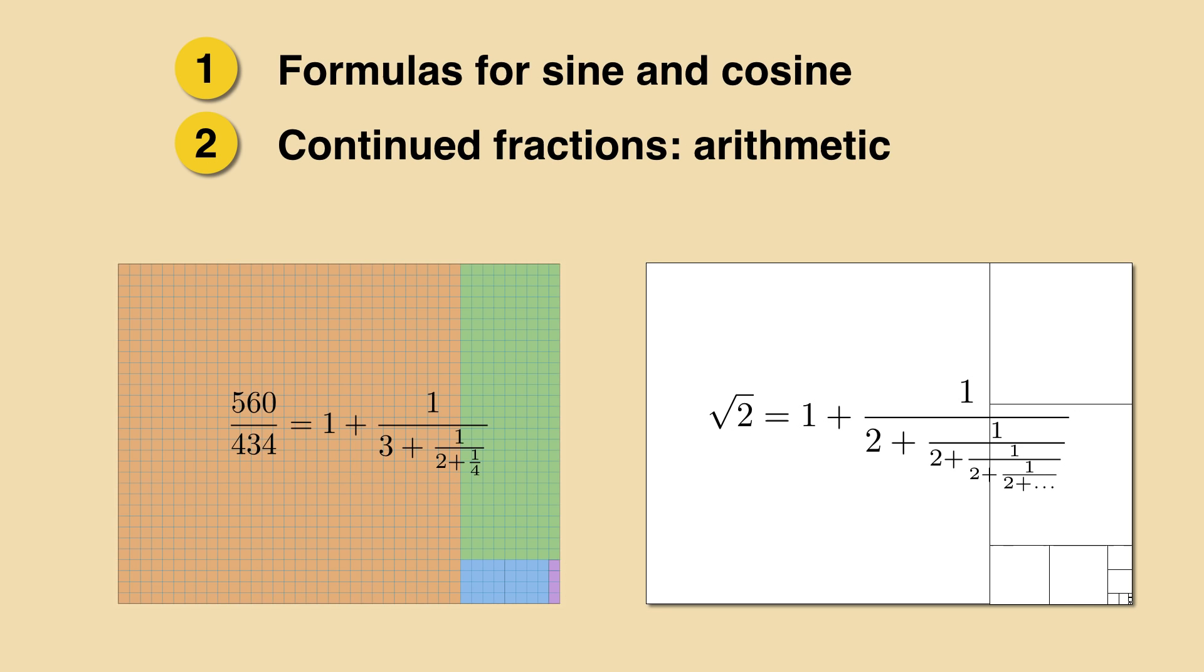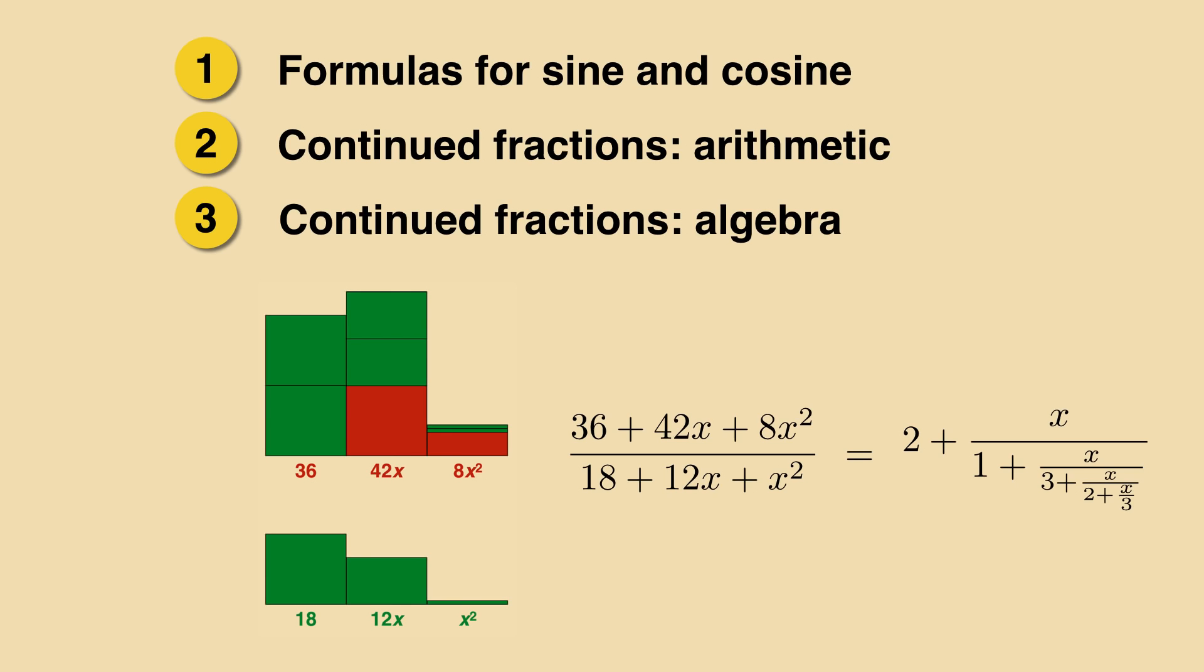Because we want to divide sine by cosine, which are functions, we then extend the method of generating a continued fraction from integers to functions, namely polynomials. A geometric picture inherited from step 2 will guide us.